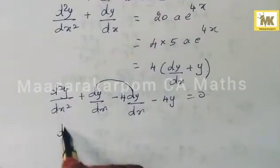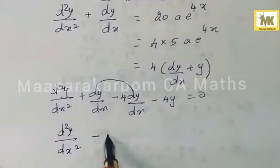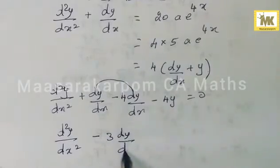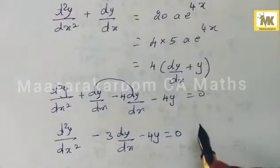d²y/dx² minus 3 dy/dx minus 4y equals 0.